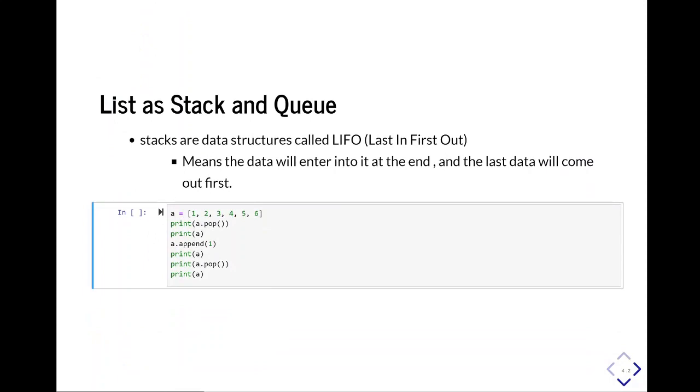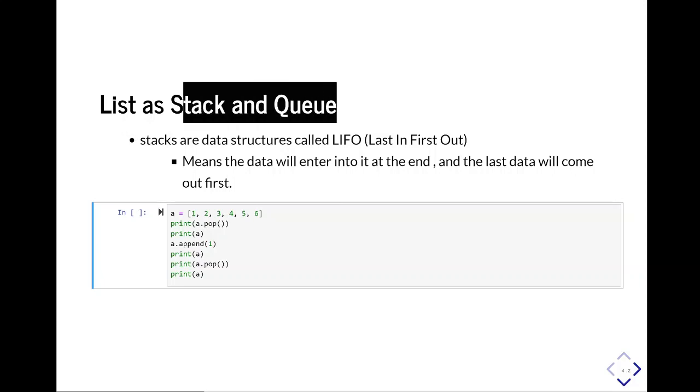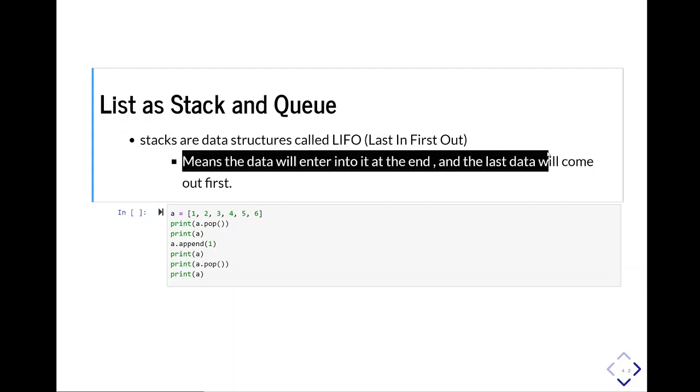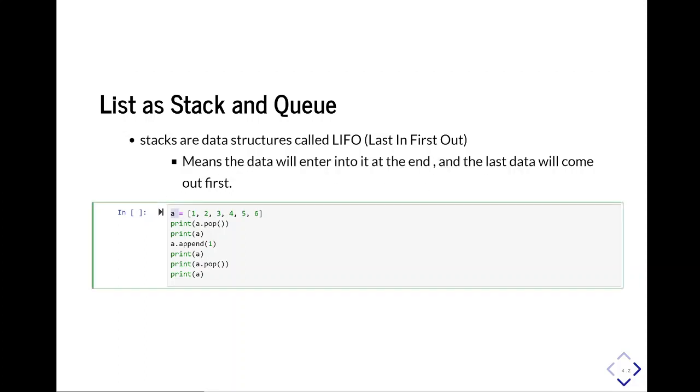Lists are very powerful, and they can be used as other data structures to help you do things. So you can use them as stacks and queues. And stacks is a data structure that is basically called last in, first out. So think of it as a stack of plates, and as you keep putting more things on top of it, as the plates start stacking, you can't get the bottom plate until you remove all the plates above it. This means that when the data enters it at the end, the last data will come out first. So let's say we have a list here, and we're going to use this method called pop. And pop allows us to simulate that stack method.